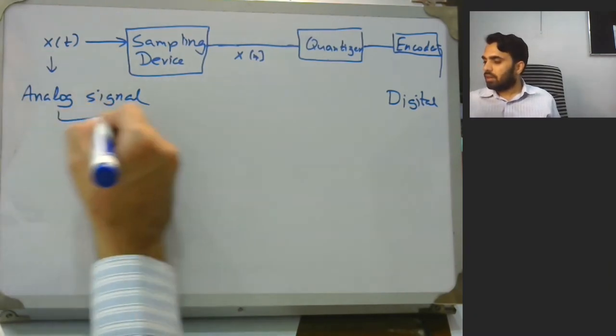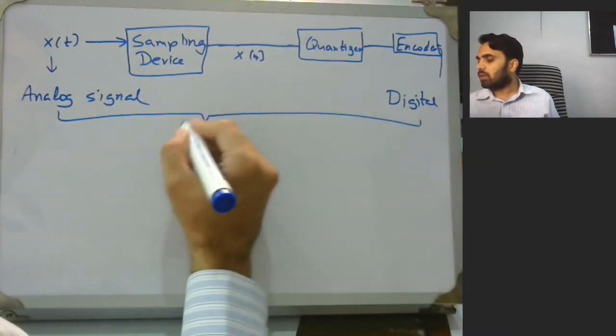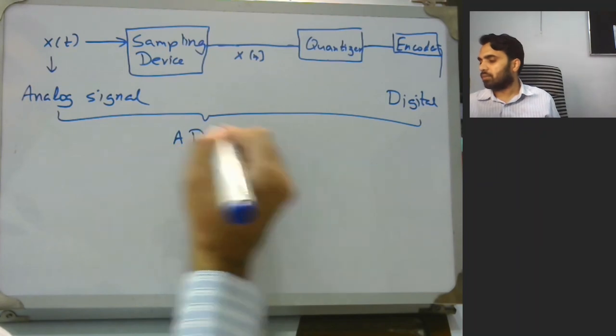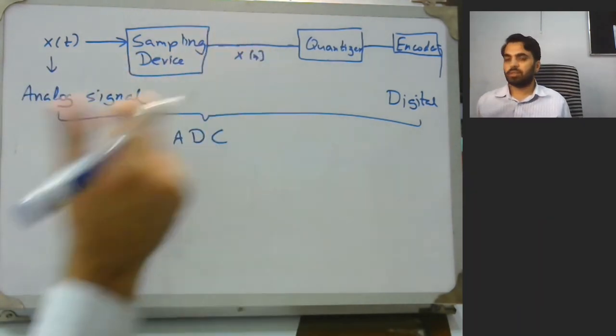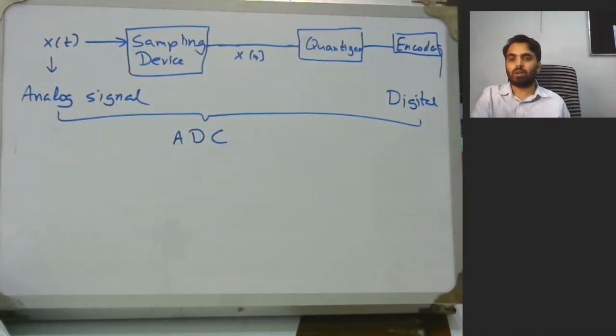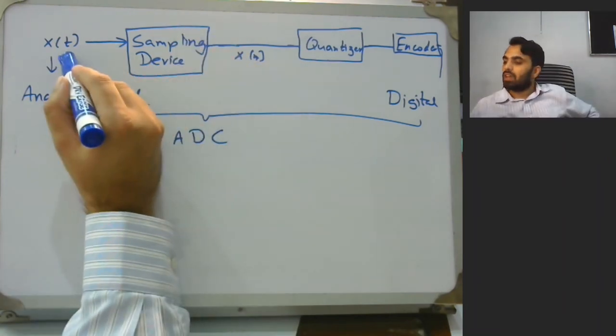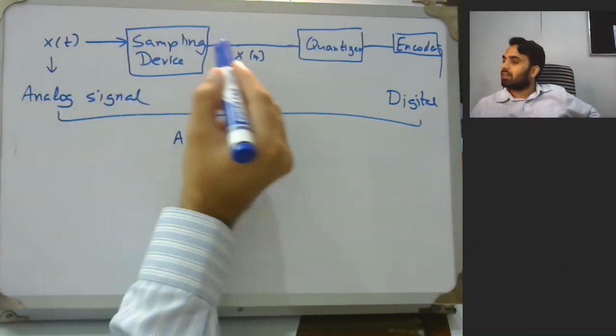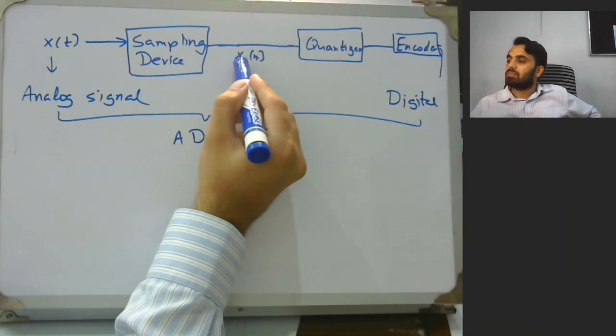This device as a whole is called analog to digital conversion, and of course the reverse would be digital to analog conversion. Over here we have a continuous time analog signal, then discrete time analog signal.